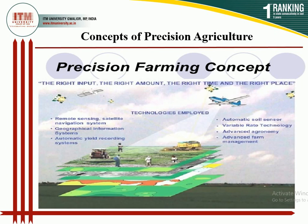The concept behind precision agriculture is to apply the right input in the right amount, at the right time, and at the right place — the 4R concept. The technologies used in precision farming include remote sensing, satellite navigation system, Geographical Information System (GIS), automatic yield recording system, soil sensor, variable rate technology, and advanced farm management.